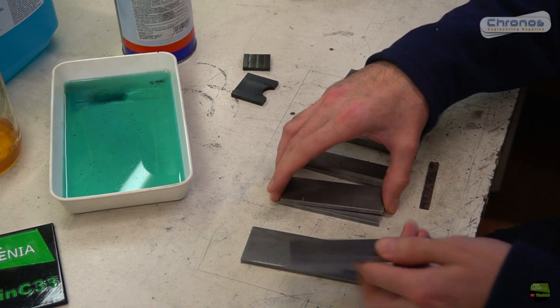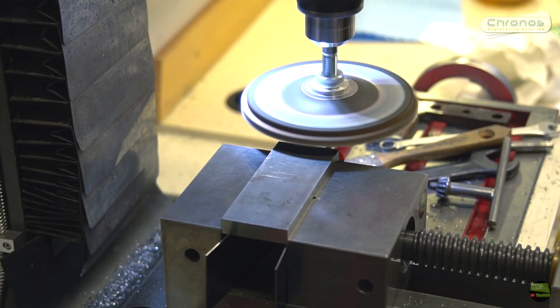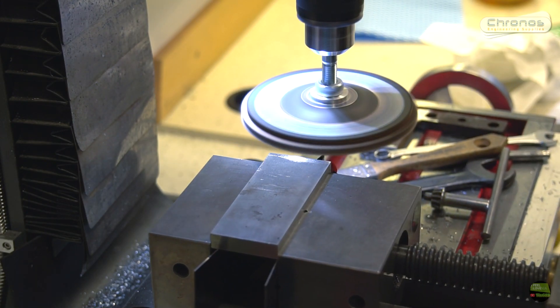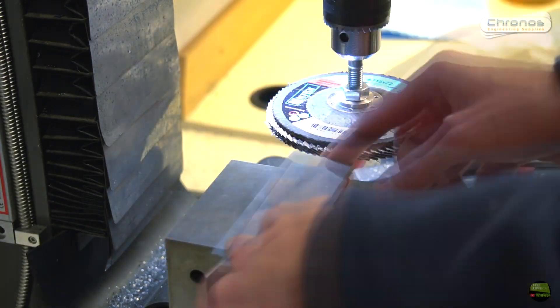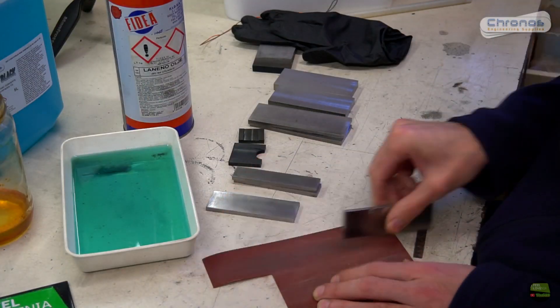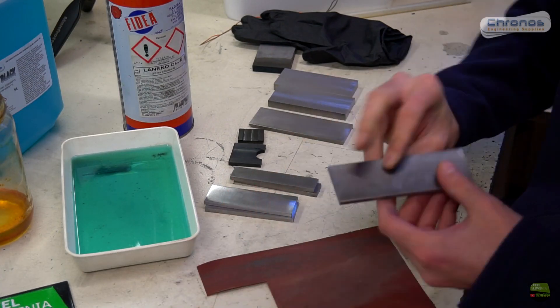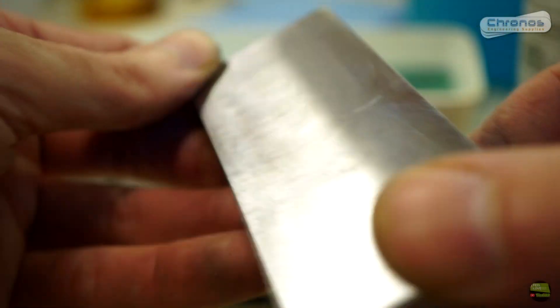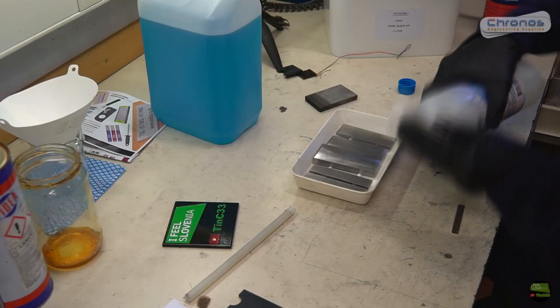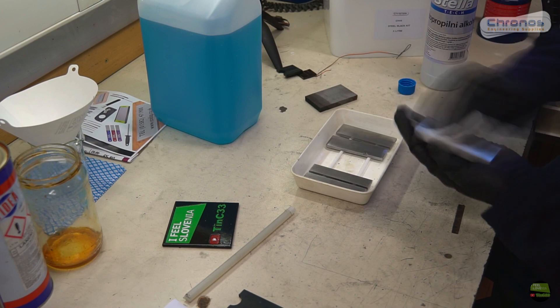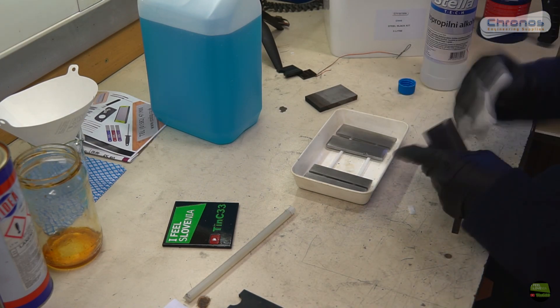Now I will blacken these homemade pliers. But firstly I will clean them to get nice surface all around. Pieces are now brushed all around, but before I put them into solution I wipe them with alcohol to get off all the dirt.